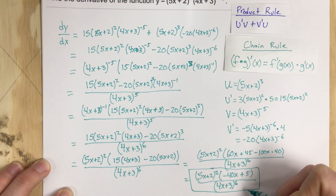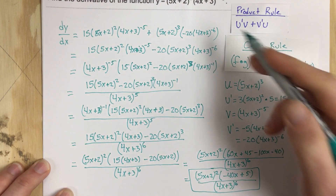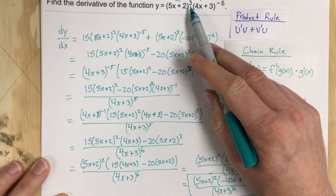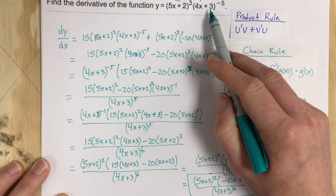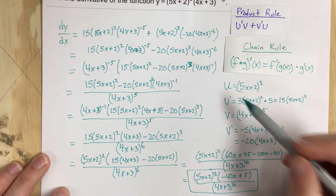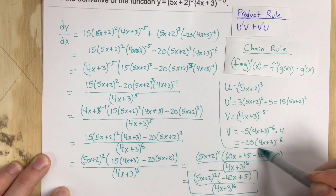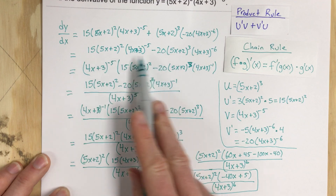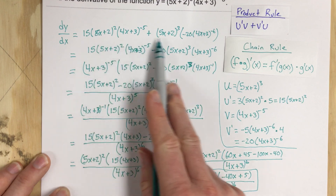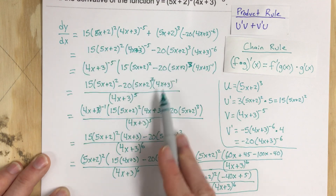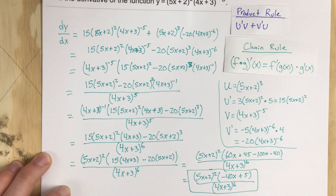This is the derivative for our original function y equals 5x plus 2 to the third times 4x plus 3 to the negative 5. Technically, our calculus part concluded right after we applied the initial product rule — everything after that was algebra to get the answer into a simpler form that's easier to work with.